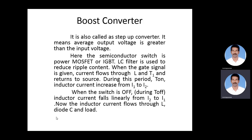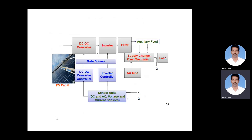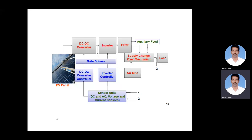We have seen the reason for the name. Now we can see the application. This is a block diagram of a photovoltaic power conditioning system. In this, you can see the DC to DC converter that is connected between the PV panel and the inverter. We are going to see the operation of the DC to DC converter now.